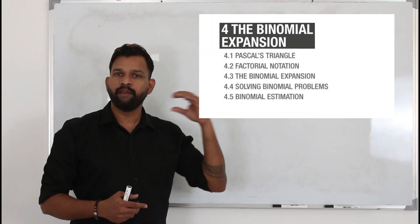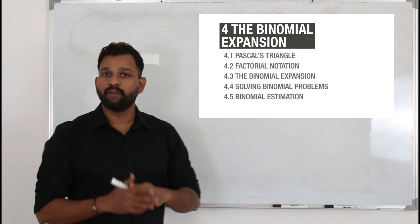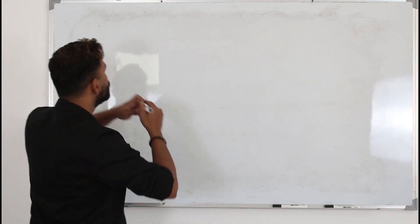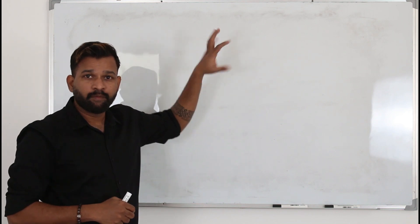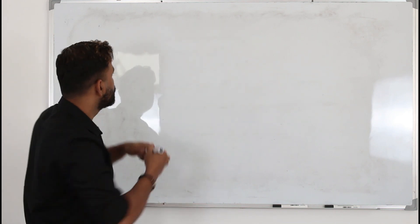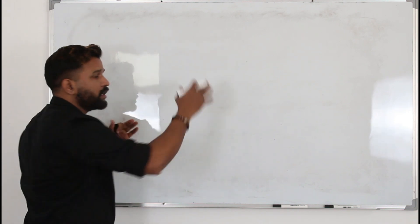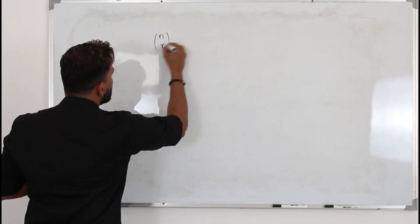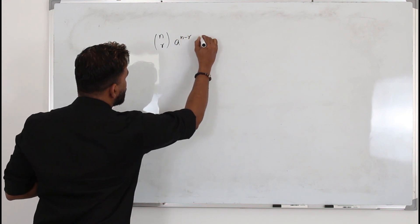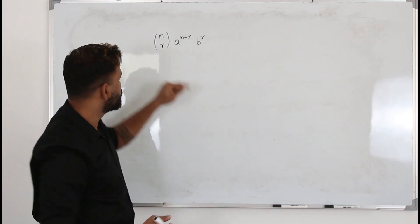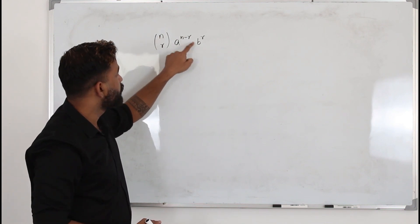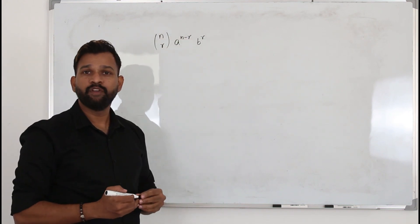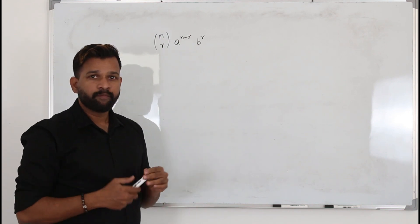Topic 4.4 is solving binomial problems — a very important topic where you need to learn only one formula. The rule is to find the nth term, or general term, of a binomial expansion. If you look at any one term in the binomial expansion, it will be of the form: nCr · a^(n−r) · b^r.